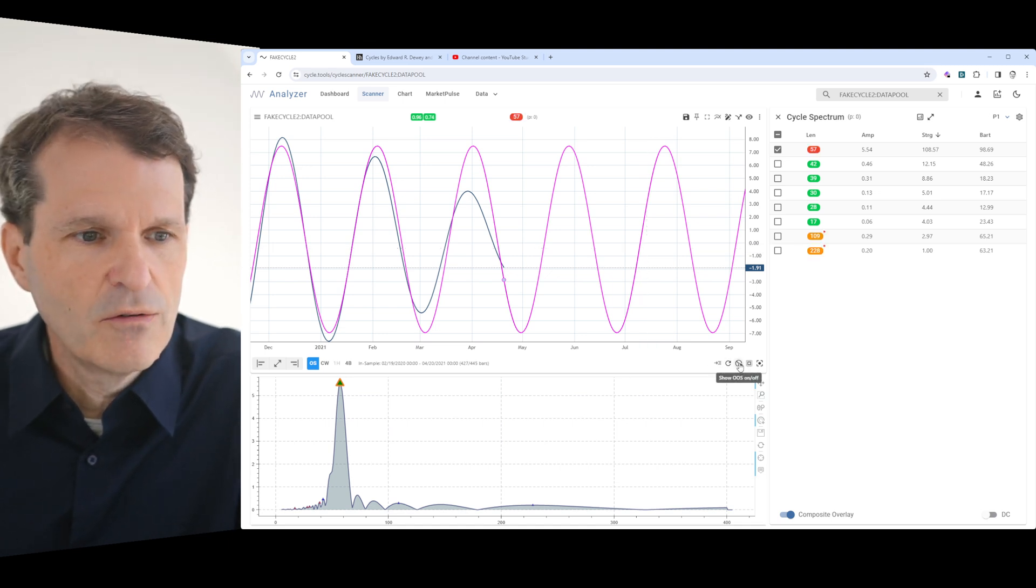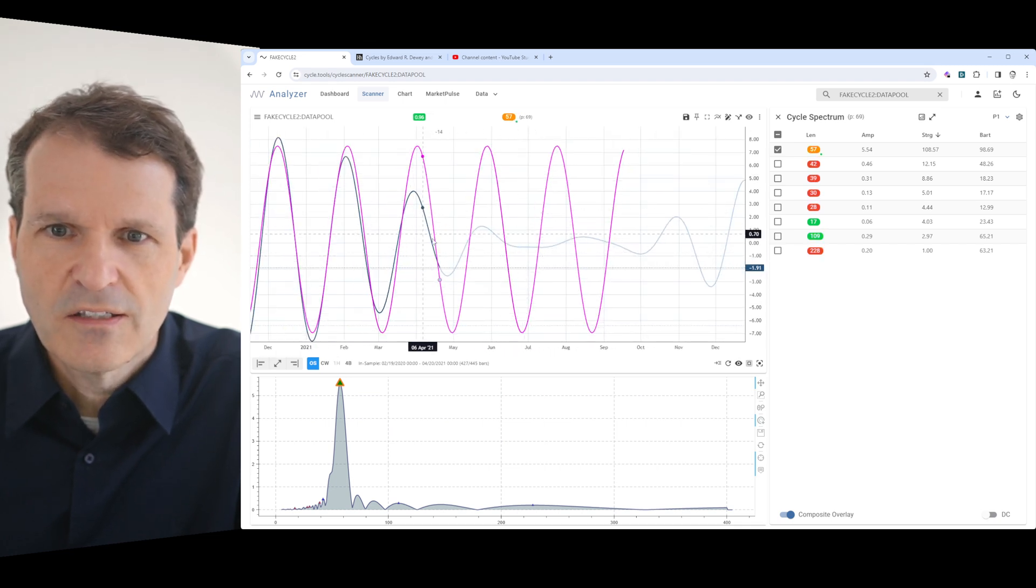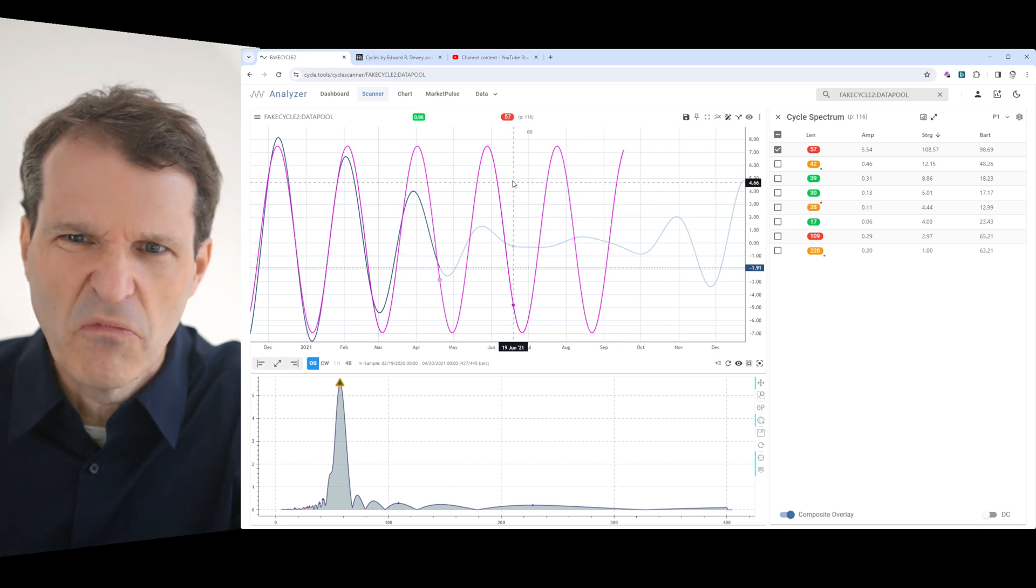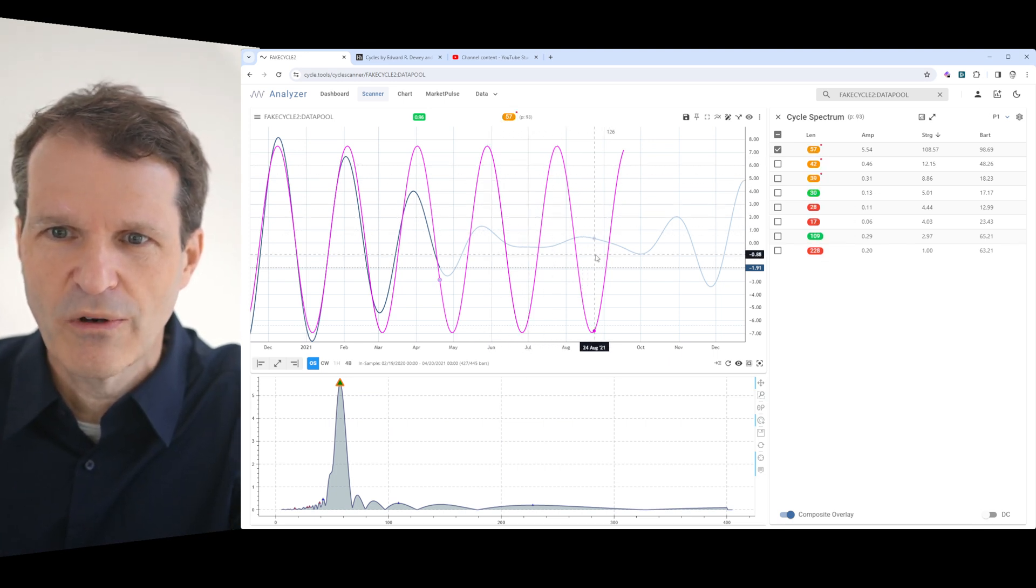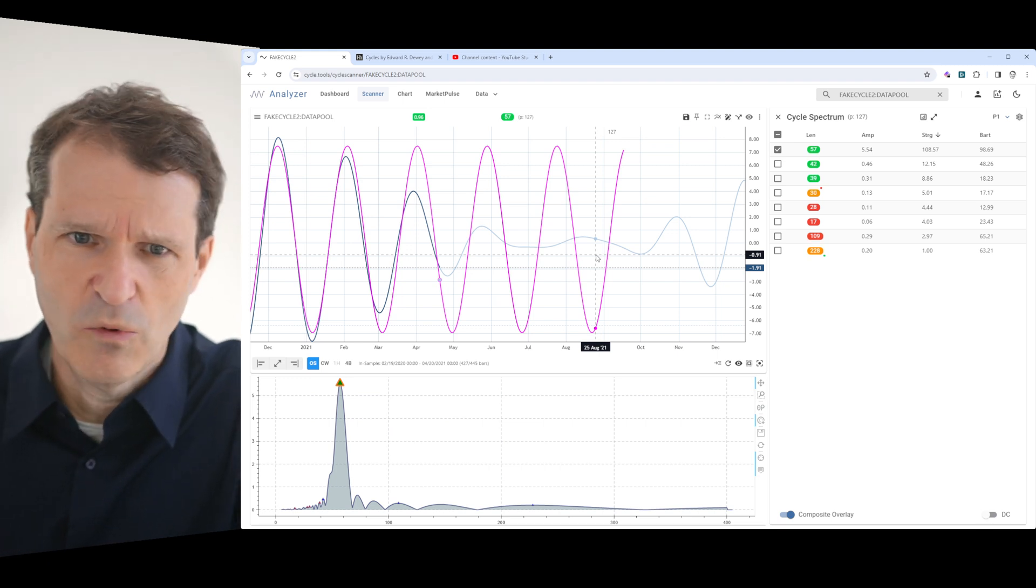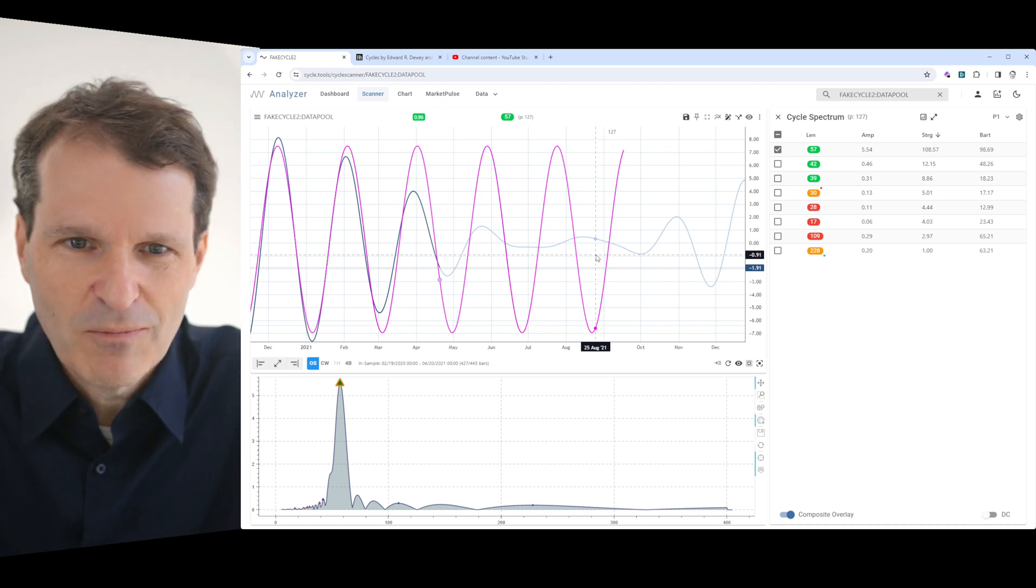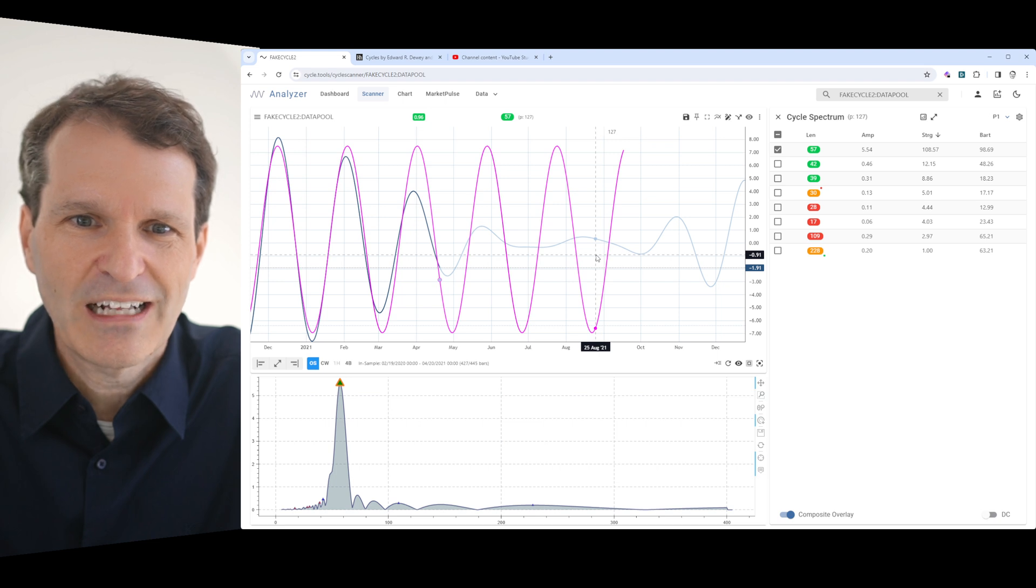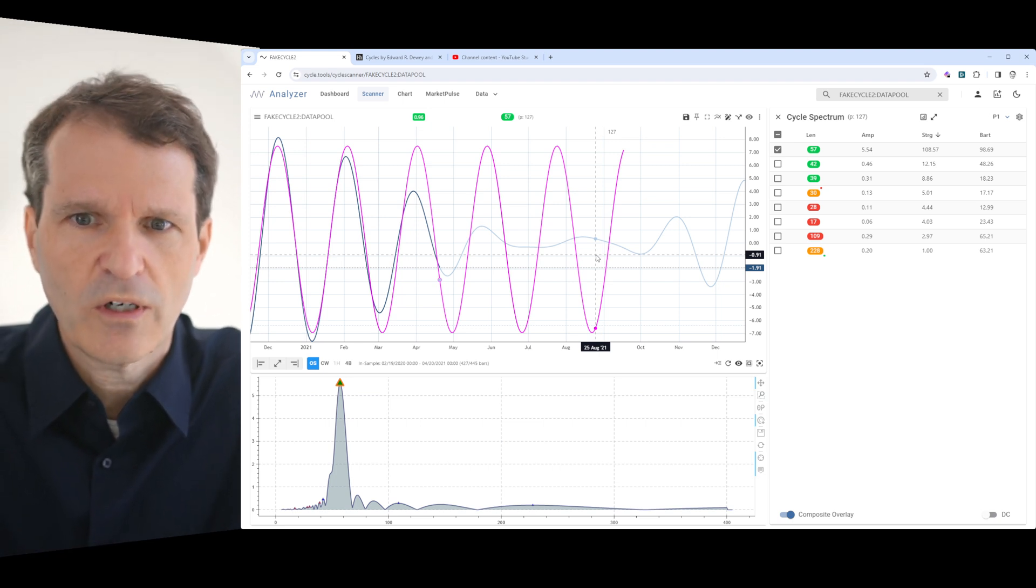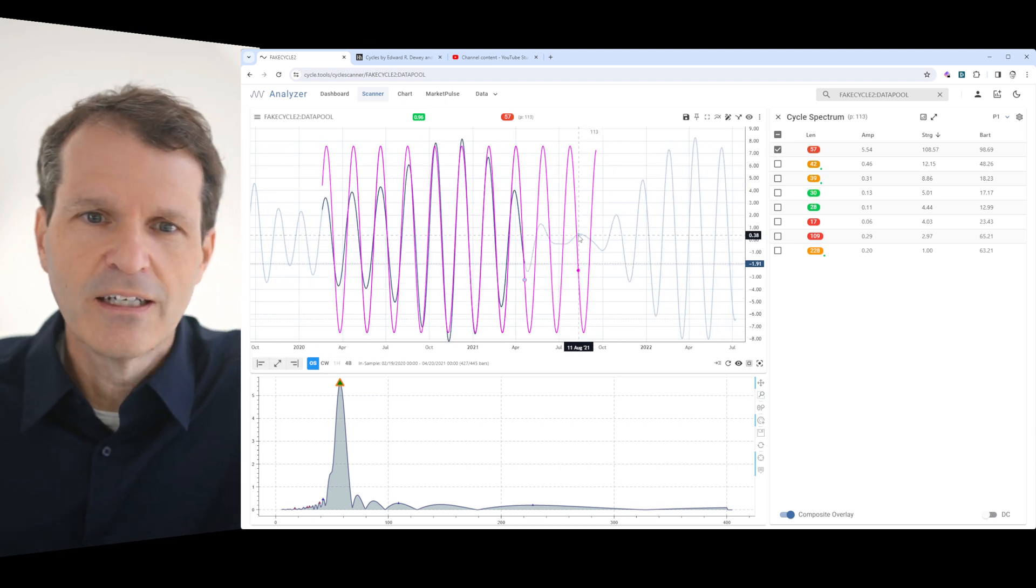If you look what happens in the real data set, this cycle is now disappearing. So the projection with the top or bottom is off. We assume cycle analysis doesn't work, cycles don't work for prediction. That's the skepticism on cycle analysis. This is what people say—cycles don't work. But that's not the root cause.